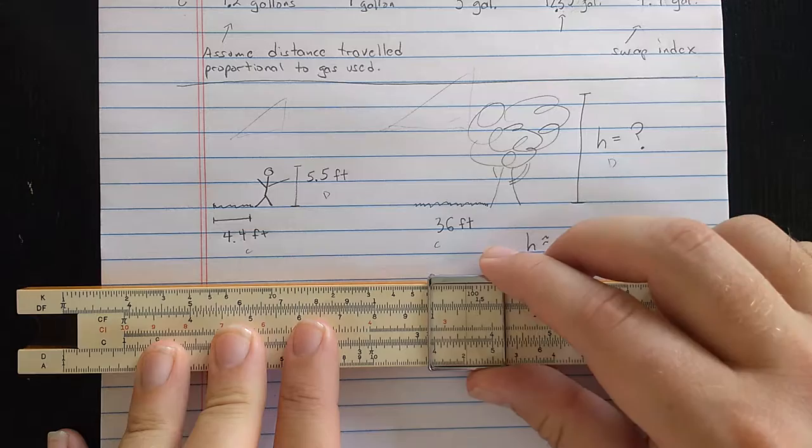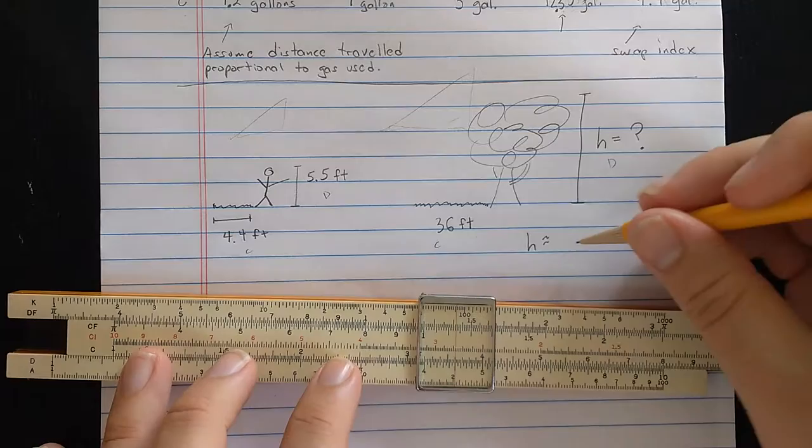So then I'll come out on the C scale to the 3.6, about there, and I read result 4.5.